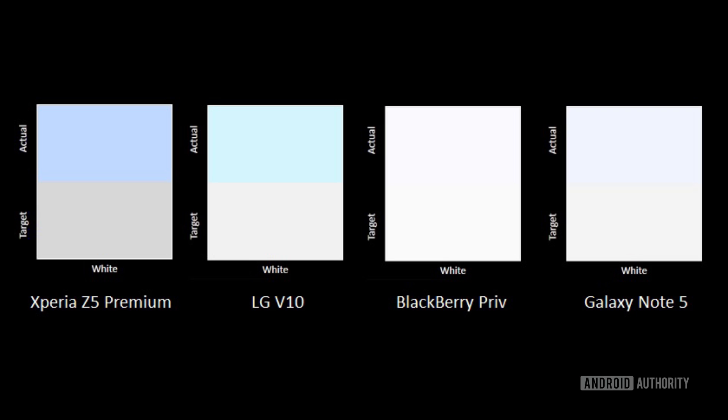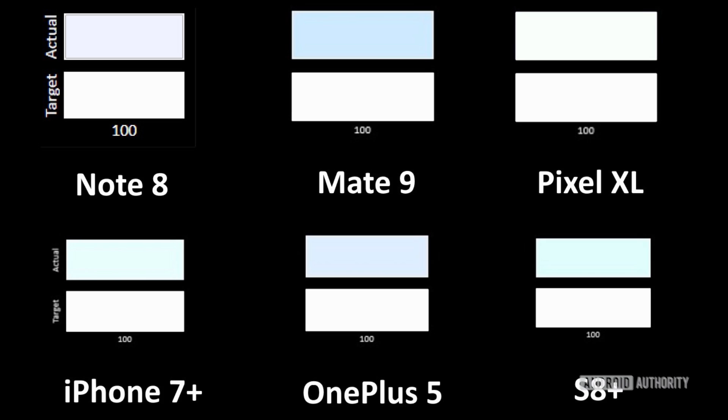When it comes to color accuracy, in the past AMOLED displays have always been better at showing colors than LCD displays. Here are some graphs from white tests I did on devices from 2015–2016, and you can see the AMOLED display did a much better job. However, more recent testing from 2017 shows less of a difference between LCD and AMOLED displays when it comes to showing pure white on screen.